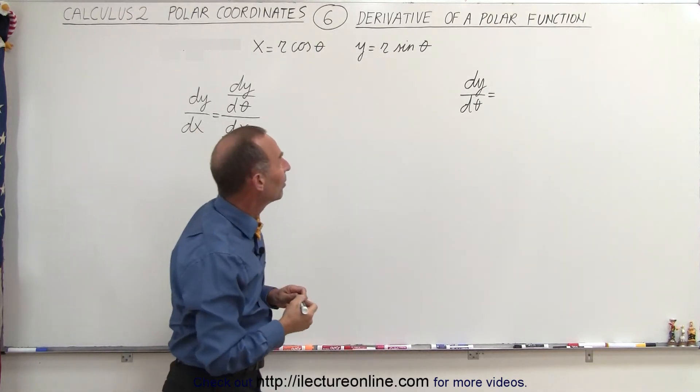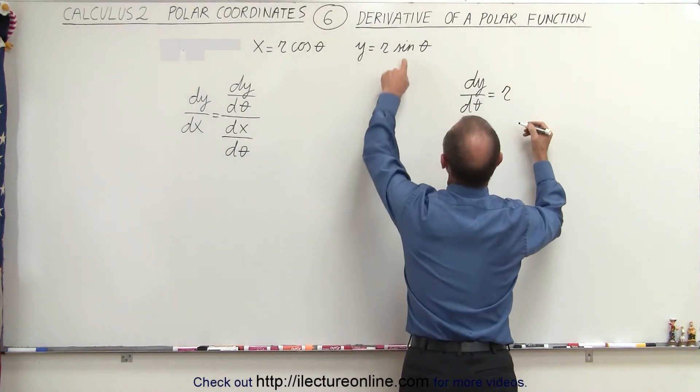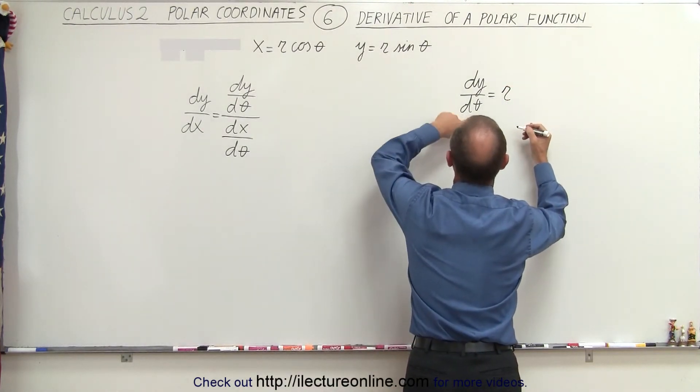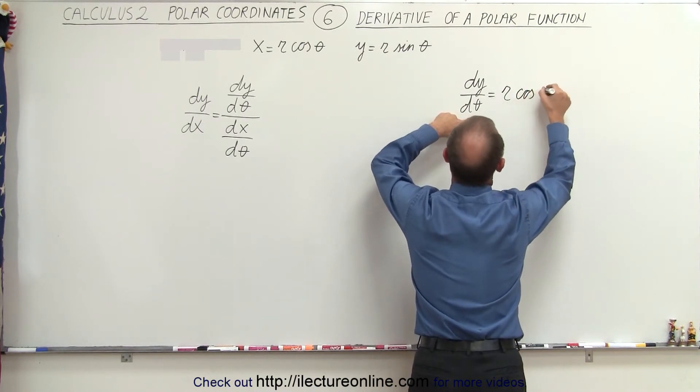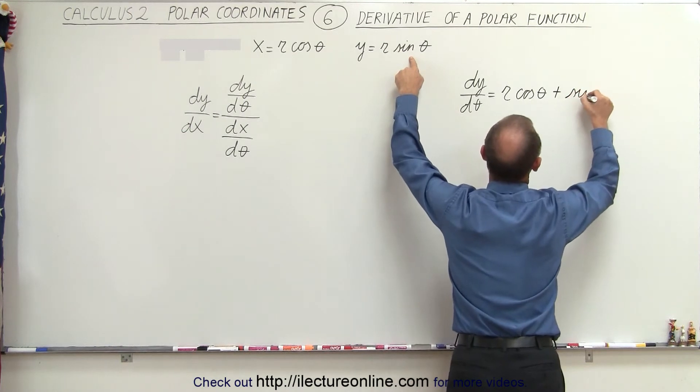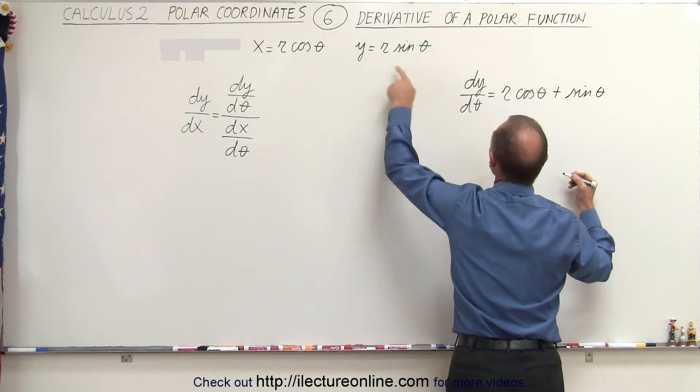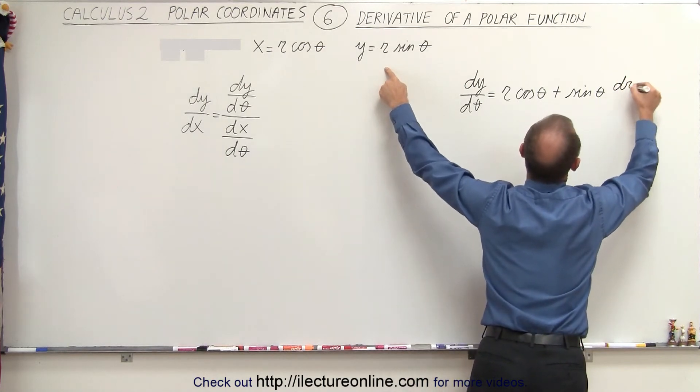It's r times the sine of theta. So we take the first, which is r, times the derivative of the sine of theta with respect to theta, which would be the cosine of theta, plus the second, which is the sine of theta, times the derivative of the first with respect to theta, which would be dr/dθ.